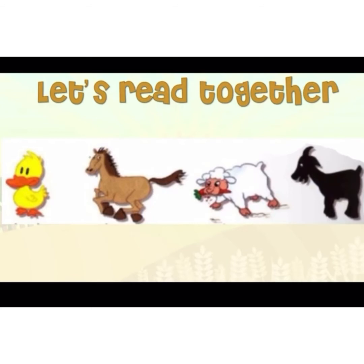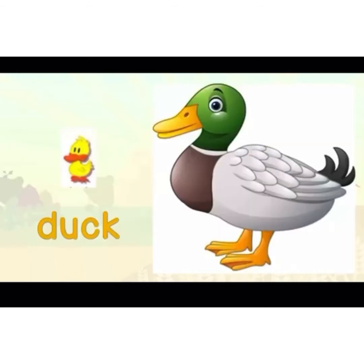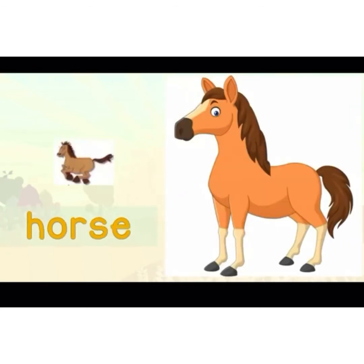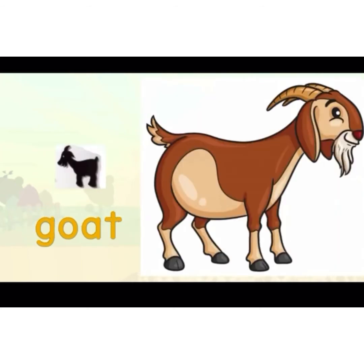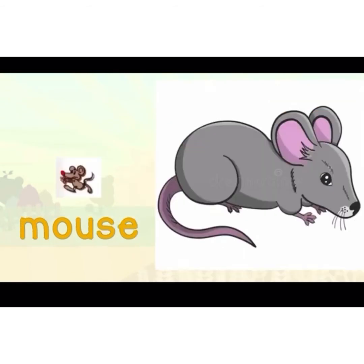Now let's learn the animal names first. Duck — duck. Horse — horse. Sheep — sheep. Please repeat after me. Goat — goat. Mouse — mouse.